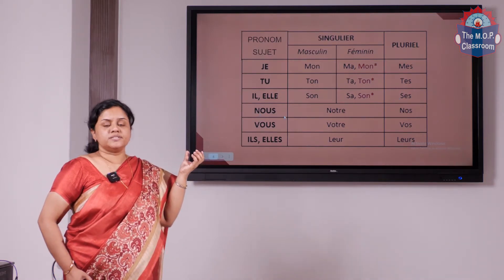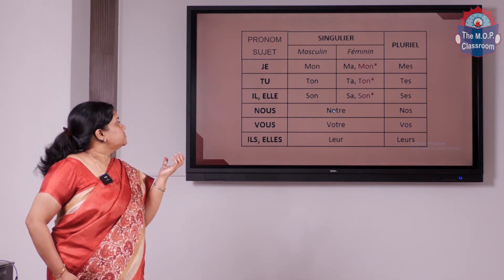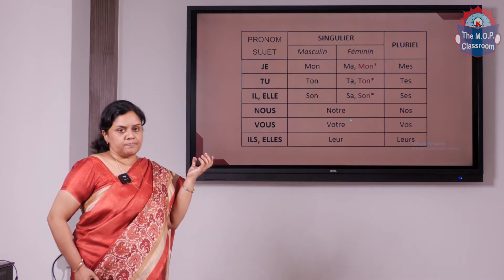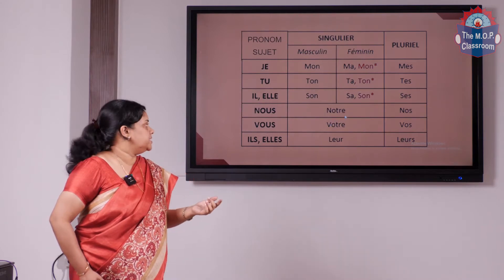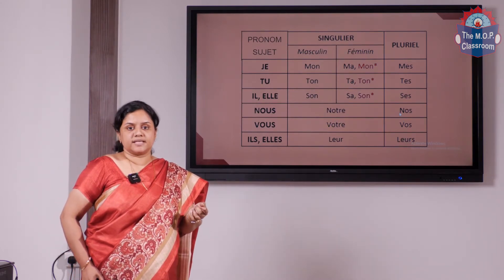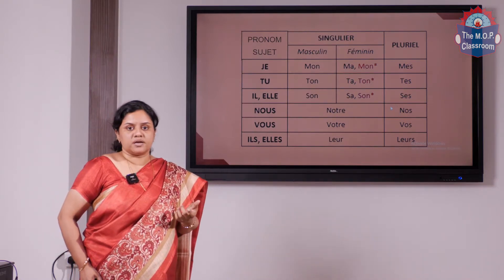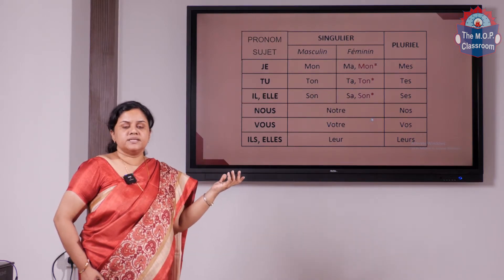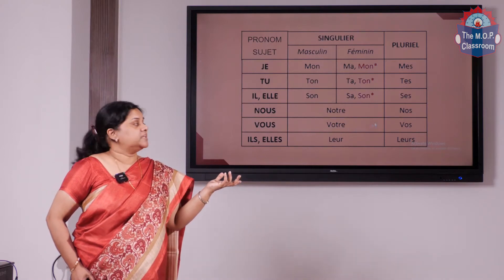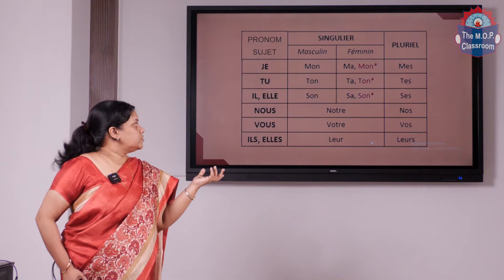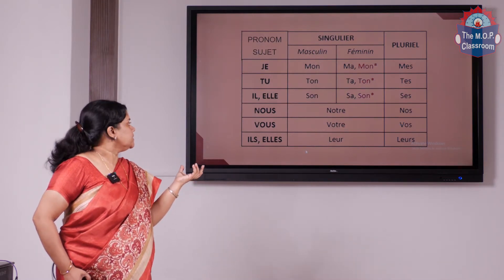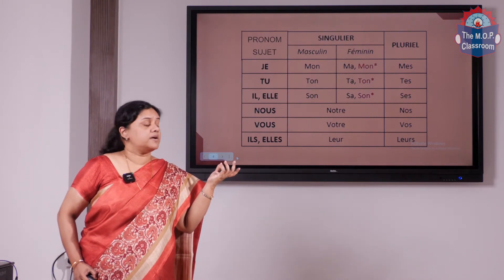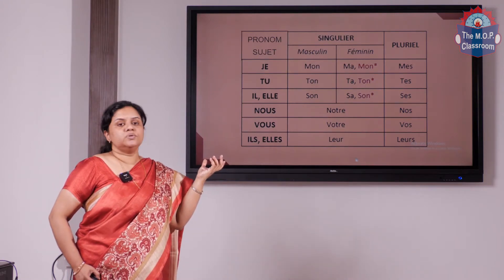Now we go to nous, which means we. The possessive adjective of nous is notre, meaning our. The masculine and feminine form is the same — notre is used for both masculine and feminine. For the plural form it is nos, N-O-S. Both notre and nos mean our. Next, for vous, same as notre — masculine and feminine are the same: votre, and the plural form is vos, V-O-S. Both mean your. Next, ils and elles, meaning they: the masculine, feminine, and singular form is leur, L-E-U-R, and the plural is leurs, L-E-U-R-S. Both mean their.